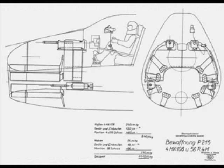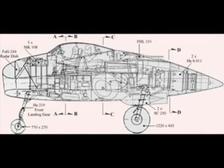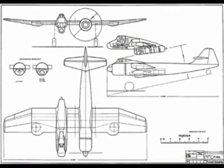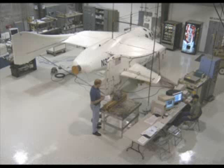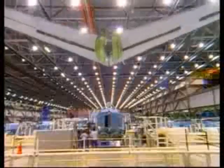A major breakthrough in rocket development came in 1938 when James Hart Wilde designed, built, and tested the first U.S. cooled liquid rocket engine. In 1947, this rocket engine powered the first supersonic research aircraft.